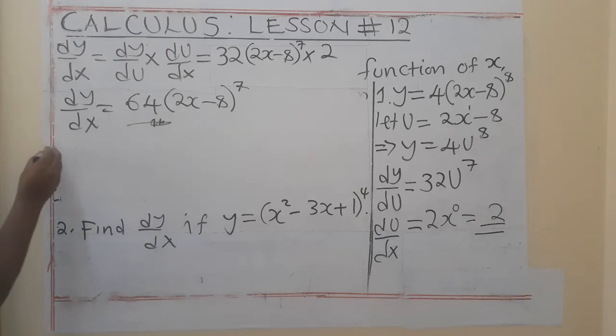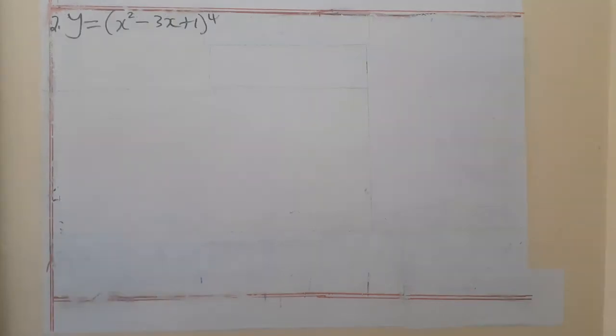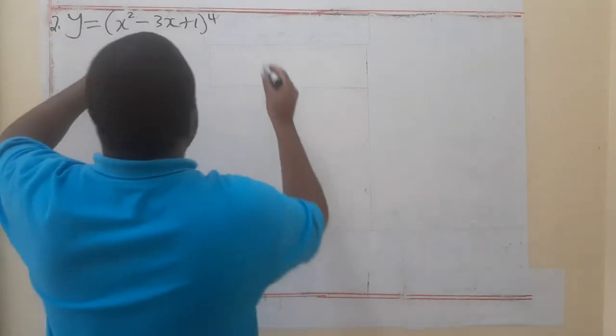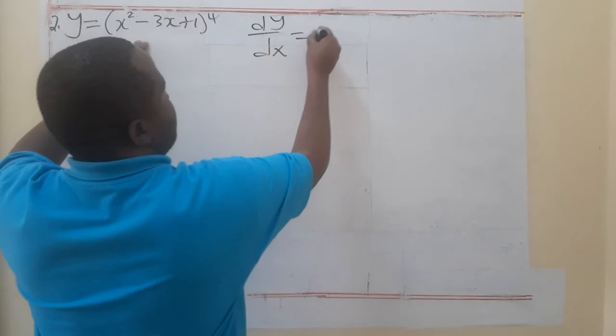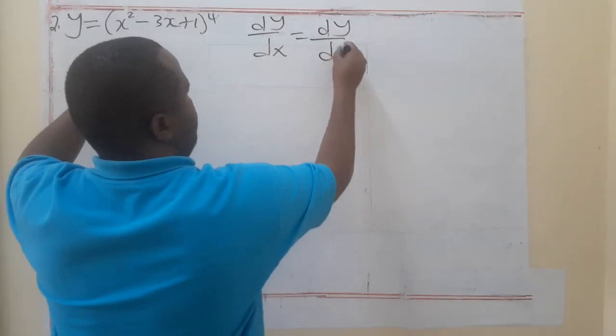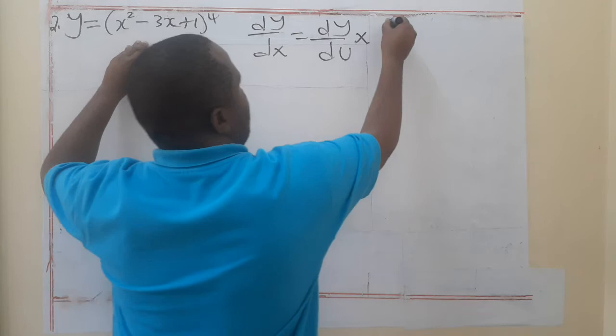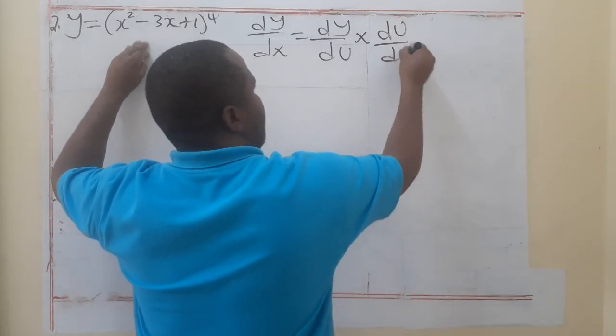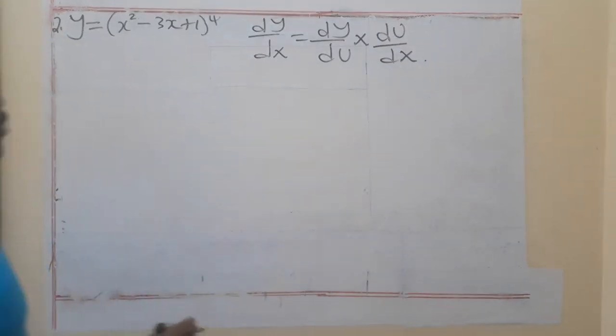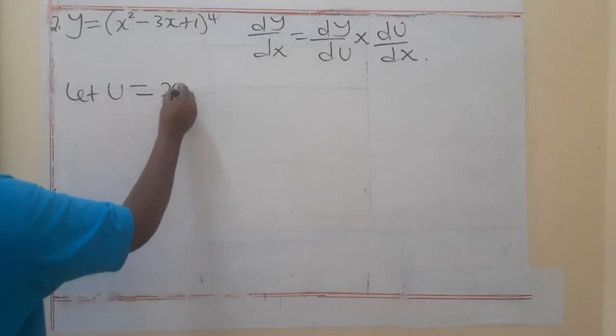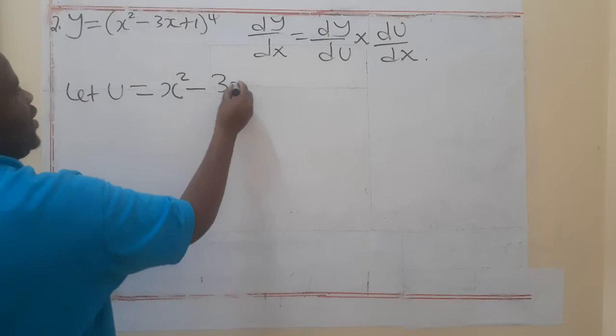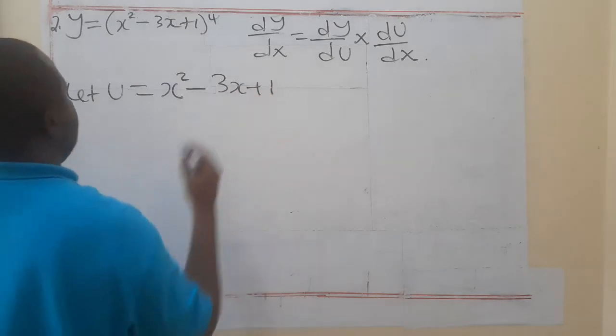Number 2. So, for us to find dy/dx, we are saying dy/du by du/dx. So, now, for this function, we'll say, let u be equal to x squared minus 3x plus 1.